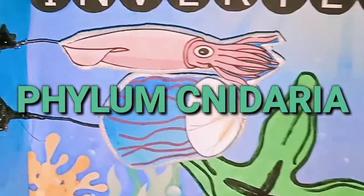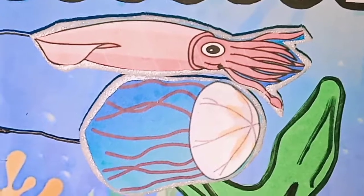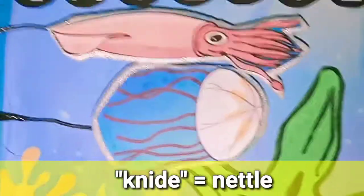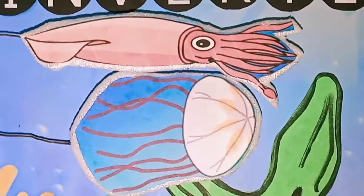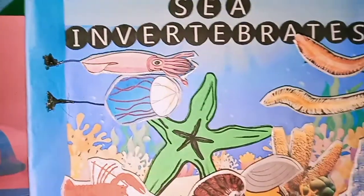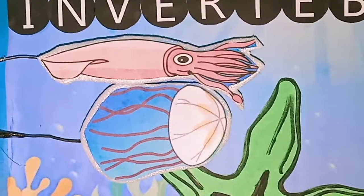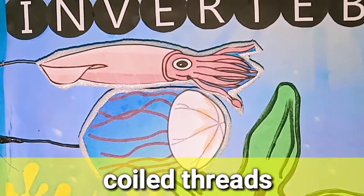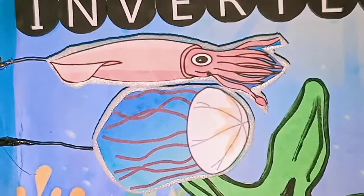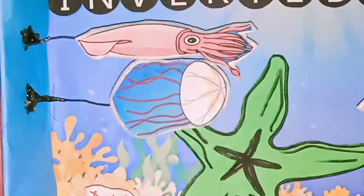Phylum Cnidaria: Phylum Cnidaria includes jellyfish, sea anemones, and corals. The word Cnidaria comes from the root word 'cnid,' which means nettle. It refers to the special stinging cells that animals in this group have for protection and predation. These cells contain coiled threads that are fired at predators and prey. The threads may contain paralyzing substances or sticky substances that entangle their target.